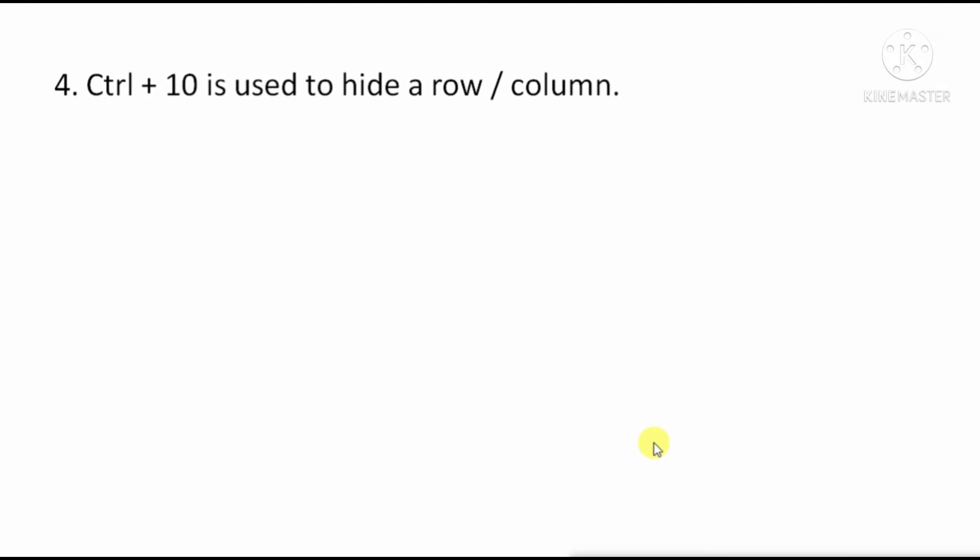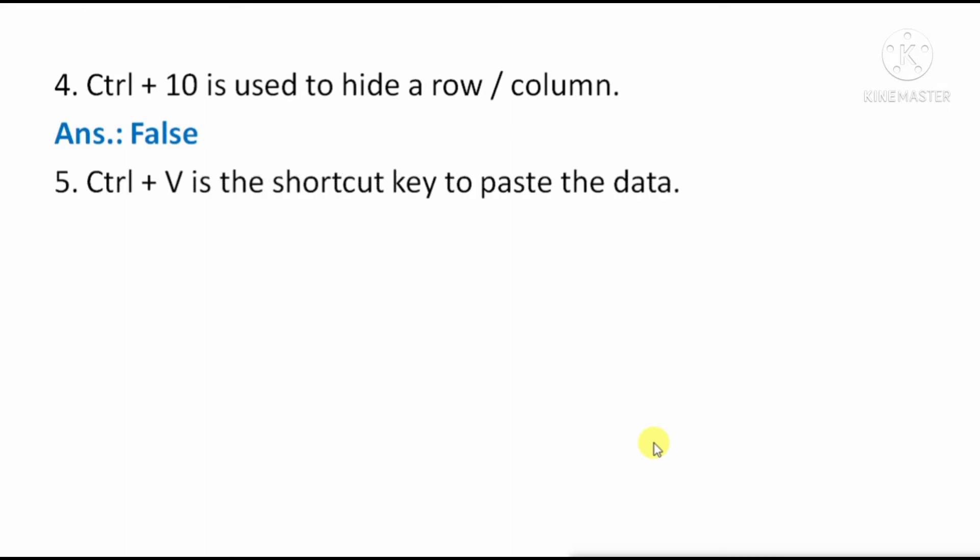Ctrl+10 is used to hide a row or column — this is False. Next, Ctrl+V is the shortcut key to paste the data — this is True.